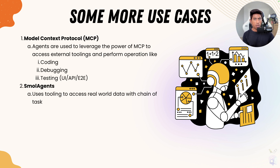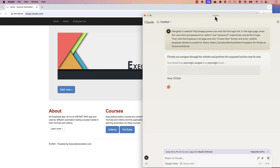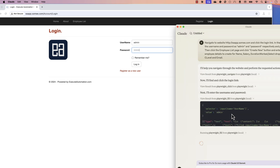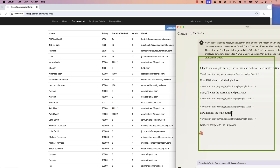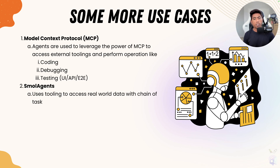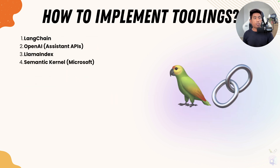The same kind of operation is done by the Model Context Protocol. I've also built a Model Context Protocol for Playwright, which can be leveraged for coding, debugging, and testing — UI, API, or end-to-end tests. If you want to implement tool calling in your large language model, you can use frameworks like LangChain, OpenAI Assistant APIs, LlamaIndex, or Semantic Kernel for Microsoft. All these tools support tool creation and fusing that with a large language model. The most popular among all of these is LangChain.